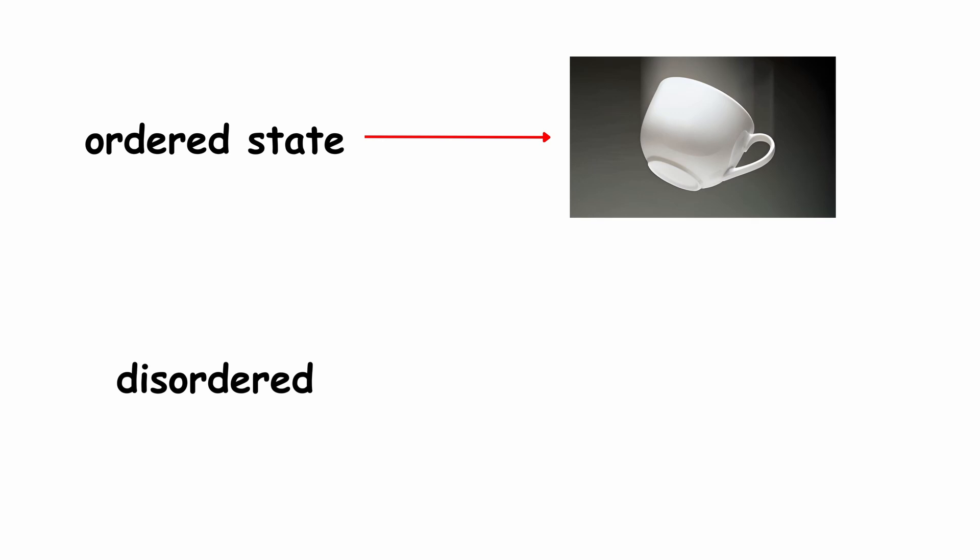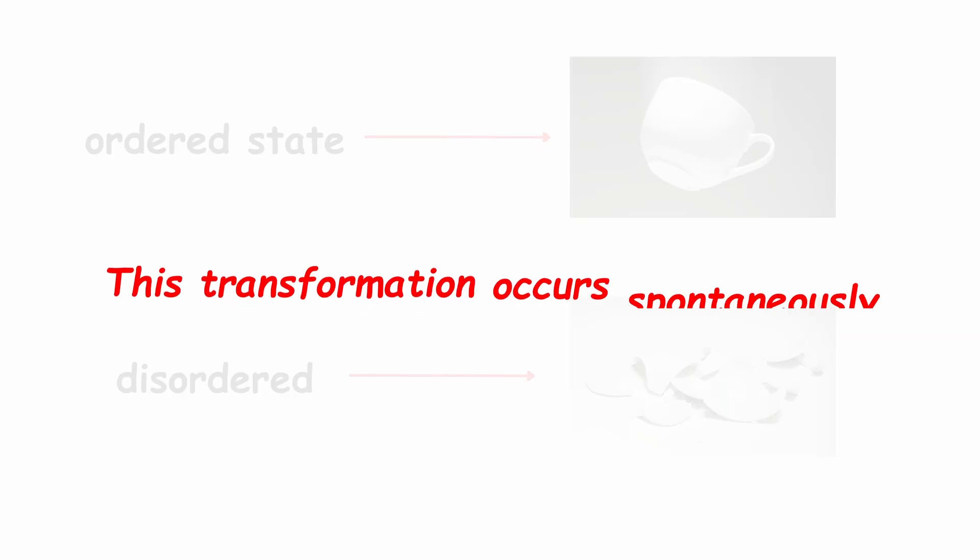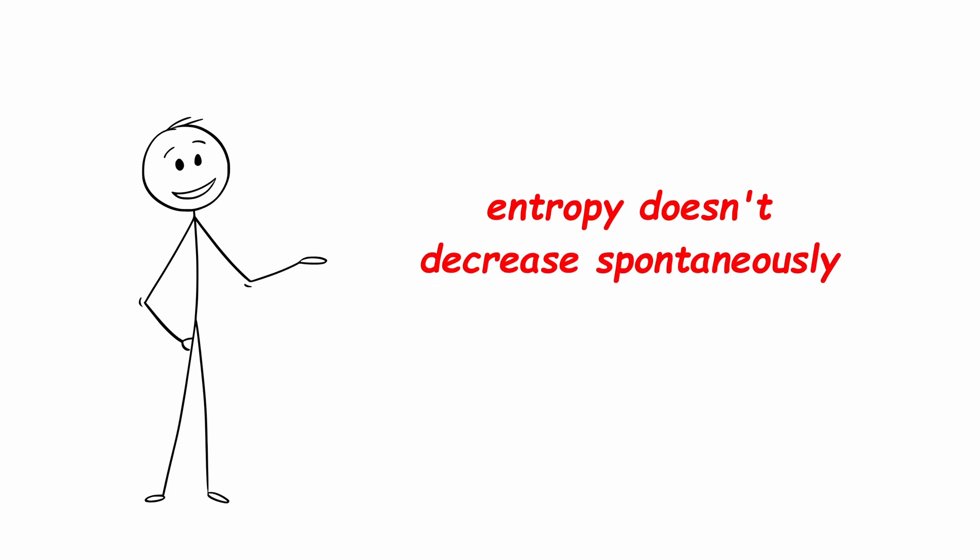The system went from an ordered state, the whole cup, to a disordered one, the fragments. This transformation occurs spontaneously, but the reverse process, the pieces reassembling themselves, doesn't happen without external intervention. This is what means that entropy doesn't decrease spontaneously.